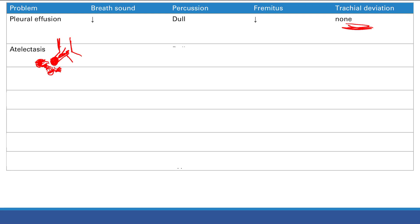In atelectasis, what happens to breath sounds in the affected area? The alveoli aren't filling with air, so breath sounds decrease. Percussion: there's less air, so it will be duller. Fremitus: you have lower lung density, so you get decreased fremitus.